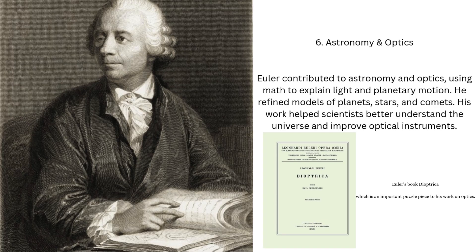Astronomy and Optics: Euler studied how light bends, refracts, and reflects, supporting better lens and telescope design. He calculated orbits of planets and moons with impressive accuracy. Euler published hundreds of papers on celestial mechanics, improving predictions of planetary motion. His work in optics clarified how light interacts with materials, influencing photography and scientific instruments. By connecting mathematics with observations, Euler advanced both theoretical and practical science. His methods guided astronomers and physicists for generations.